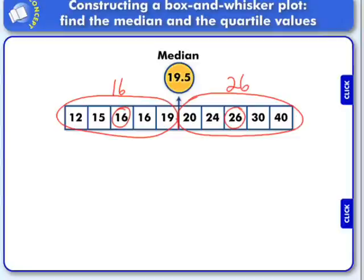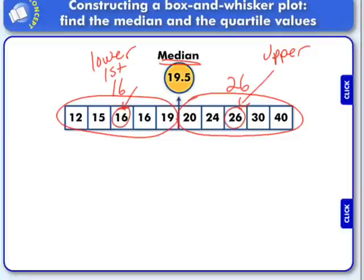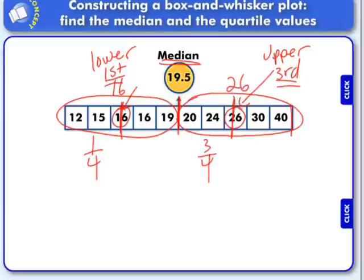Now this particular unit has a lot of vocabulary. This, of course, is our median — the middle of all the data. This is sometimes referred to as the lower median, and this is sometimes referred to as the upper median. You'll probably see this called the first quartile more than the lower median, and this is our third quartile. They get their names because a box plot divides data into quarters — this is the first quartile because it is the first quarter of data, and this is our third quartile because it represents three quarters of the data.